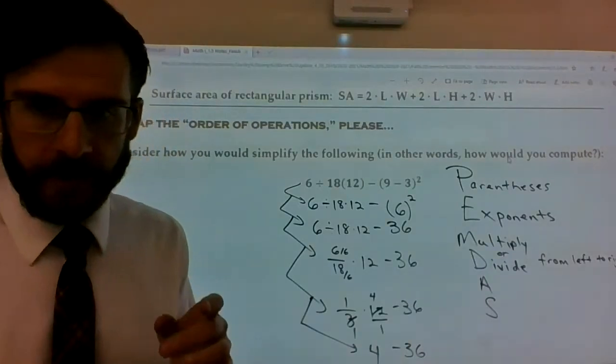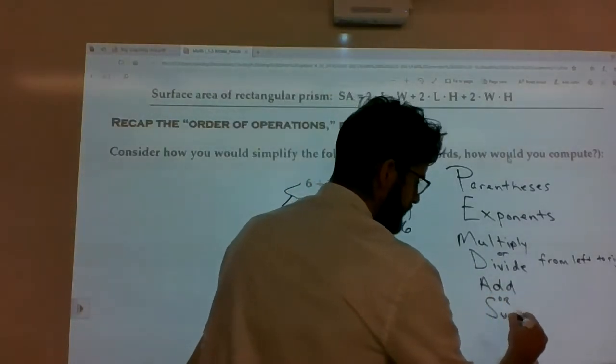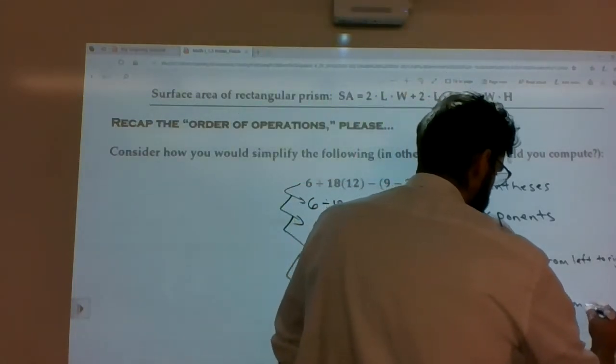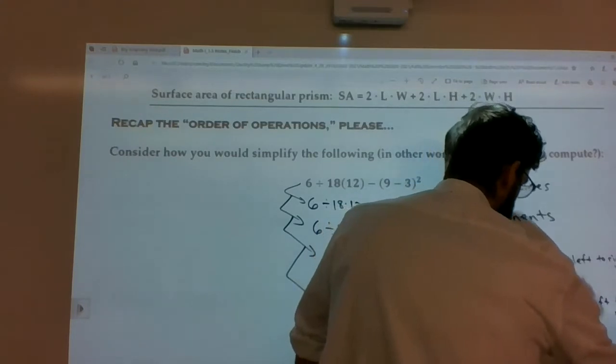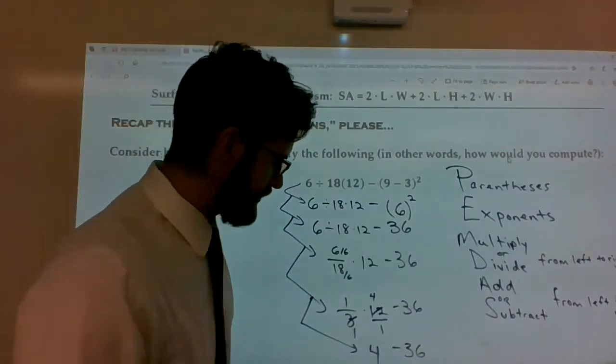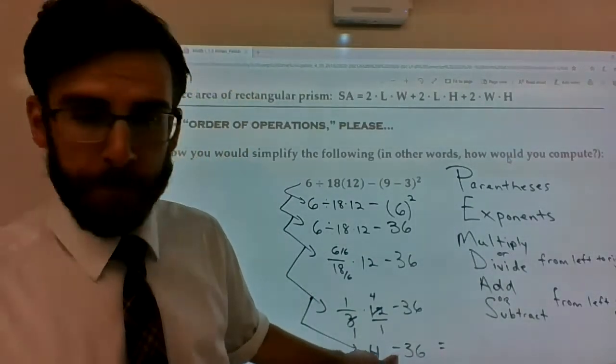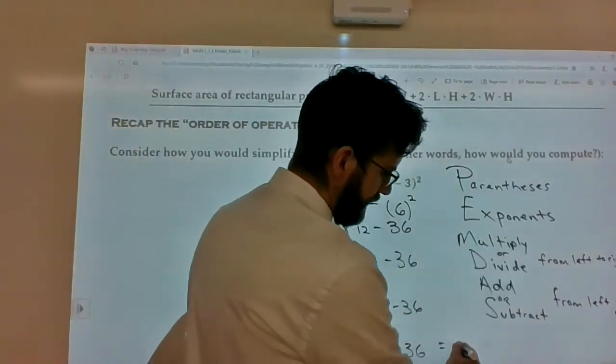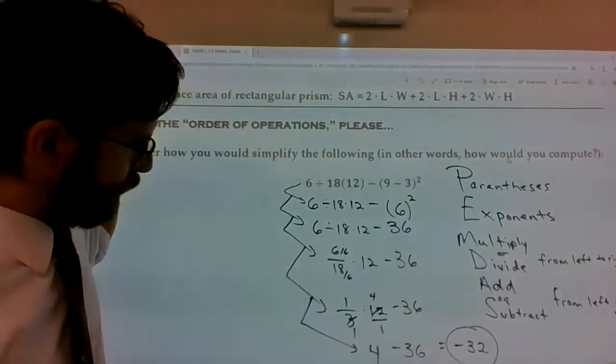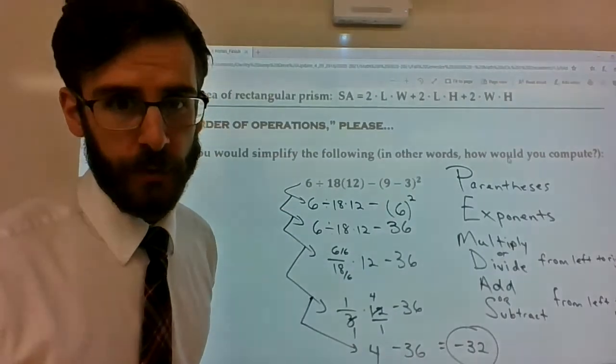And then we still got the minus 36. So, the last two moves are kind of similar to multiply or divide. It's add or subtract from left to right. So, when you're taking the difference between two numbers, 4 and negative 36, just remember, take the difference between them. 36 minus 4 is 32. The bigger number is negative. So, I'm keeping it at negative 32. Alright, I really felt it was necessary to just do that recap of what the order of operations are and what it looks like in the context of a problem where you actually have to use all the parts.